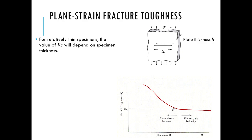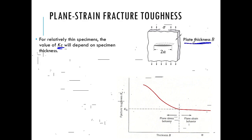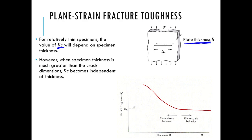As engineers, we need to find the material property K_c — the fracture toughness — for different materials. We do this by performing tests: taking a specimen, putting in an intentional crack, loading it up, and seeing when it fractures. Interestingly, when we measure this material-specific fracture toughness, it ends up depending on the thickness of the specimen — for thin plates, the fracture toughness is not constant and changes with thickness.